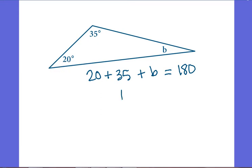and I have a leftover amount of 125 degrees. So my missing angle measure here, the measure of angle B, has to be that missing 125 degrees.